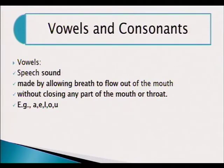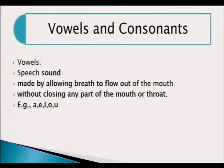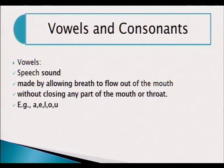Then we have vowels and consonants — these are the sounds of the letters of the alphabet. Vowels are speech sounds; we have five of them in the English language. However, letters like Y and H always produce vowel sounds — they are classified as consonants but they produce vowel sounds. Vowels are speech sounds made by allowing breath to flow out of the mouth without closing any part of the mouth or throat. That means when you utter a vowel, there is no closure in your mouth — the air is freely allowed to move out.